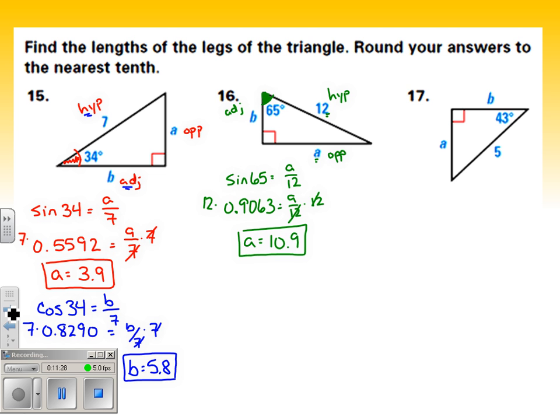Now, if I'm trying to solve for letter B, B is the adjacent side. So I want to use that adjacent side and the hypotenuse that I know. Adjacent and hypotenuse, that's what we use cosine for. Cosine 65 equals that adjacent side over the hypotenuse. Cosine 65, let's figure that out in our calculator real quick. Cos 65 equals 0.4226. And to solve for B, I just multiply both sides by 12. And I get 5.1.